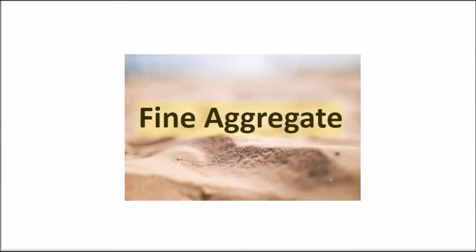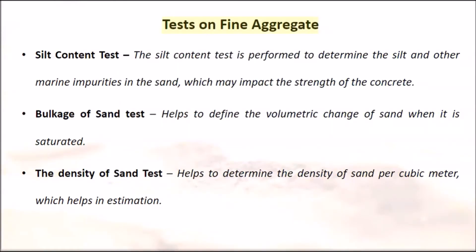Tests on Fine Aggregate. Silt Content Test: Performed to determine the silt and other marine impurities in sand that may impact the strength of concrete. Bulkage of Sand Test: Defines the volumetric change of sand when it is saturated. Density of Sand Test: Determines the density of sand per cubic meter, which helps in estimation.